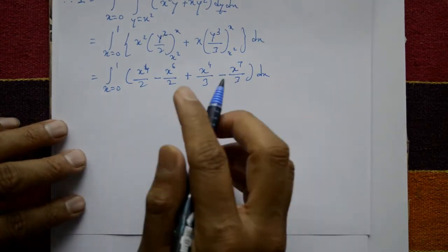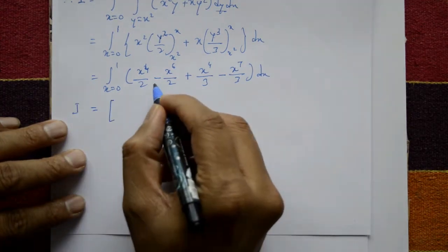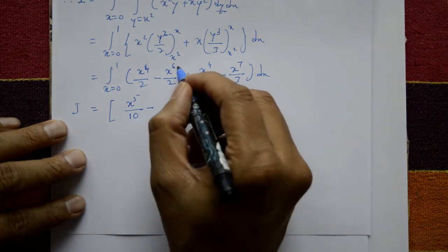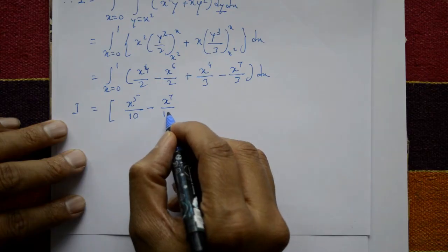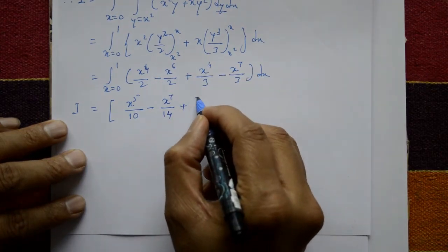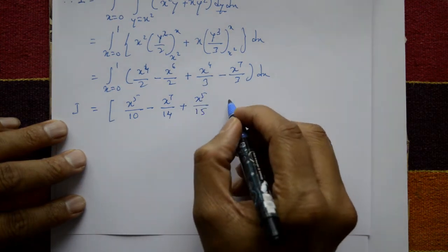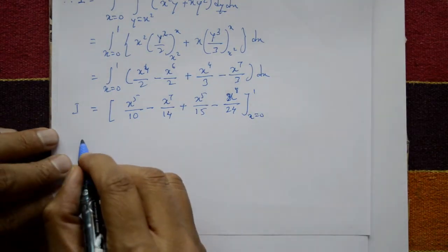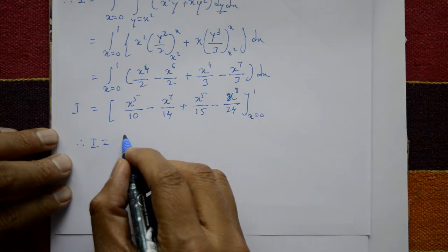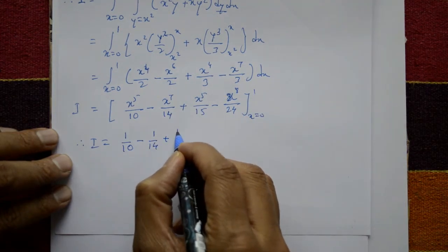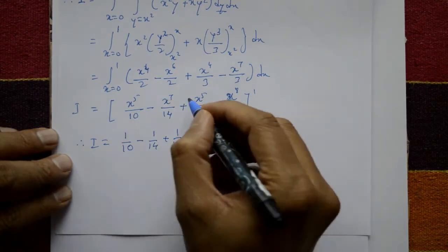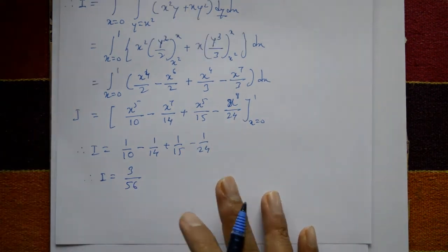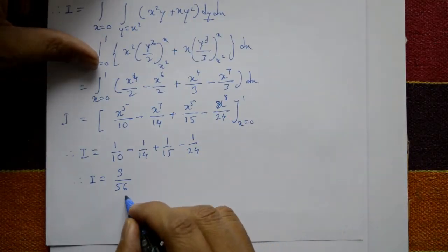Now integrate with respect to x from 0 to 1. This gives: x to the 5 by 10, minus x to the 7 by 14, plus x to the 5 by 15, minus x to the 8 by 24, evaluated from 0 to 1. Substituting x equals 1 gives: 1/10 minus 1/14 plus 1/15 minus 1/24. Substituting x equals 0 gives 0. Simplifying this expression, I equals 3 by 56, which is the required solution.